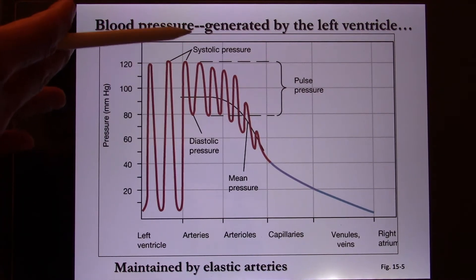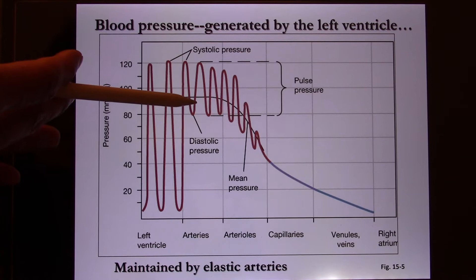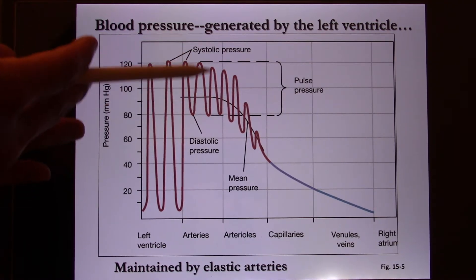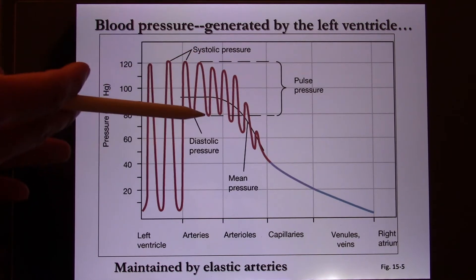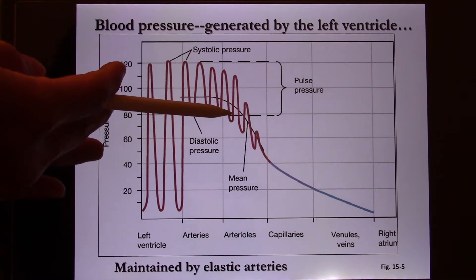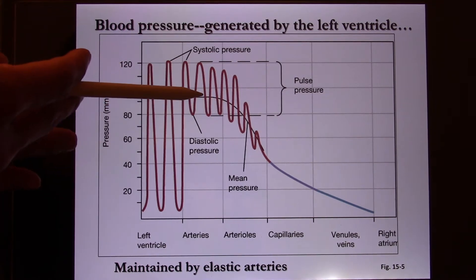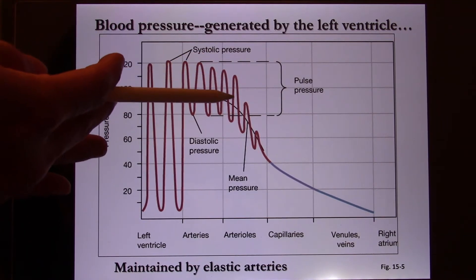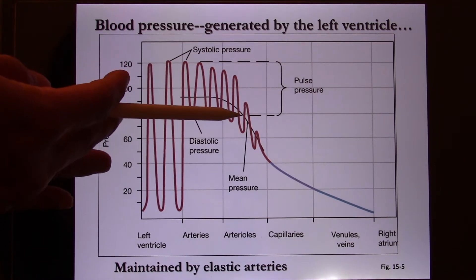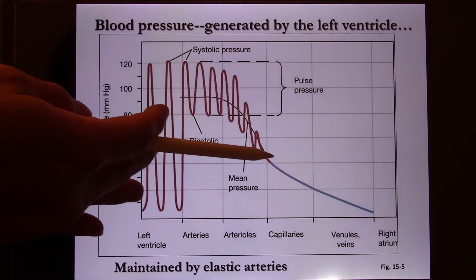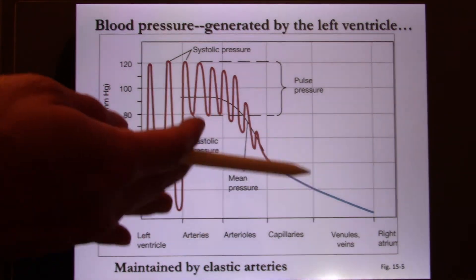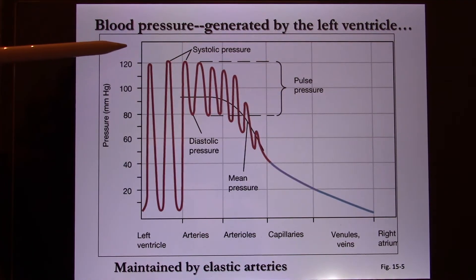The difference between systolic and diastolic pressure is called the pulse pressure. Because of this, you are able to measure the pulse in the artery and arterioles, since you can still feel the difference between systolic and diastolic. This difference gradually decreases as you go to the arterioles and starts to disappear in the capillaries and veins, so you won't be able to measure the pulse in the veins — they are pretty far away from the left ventricle.